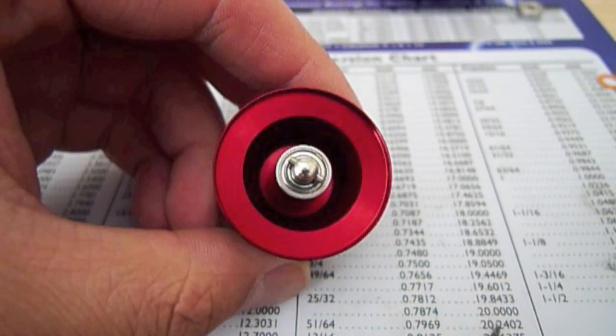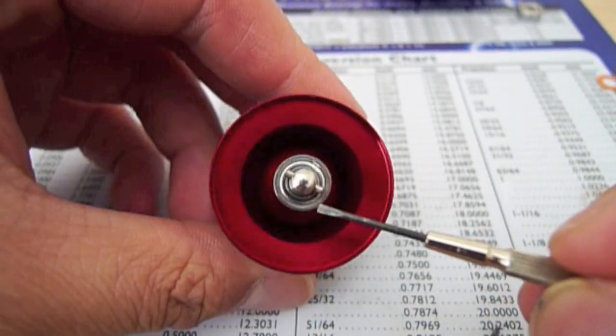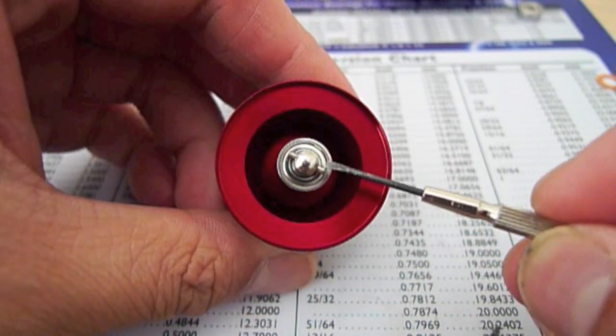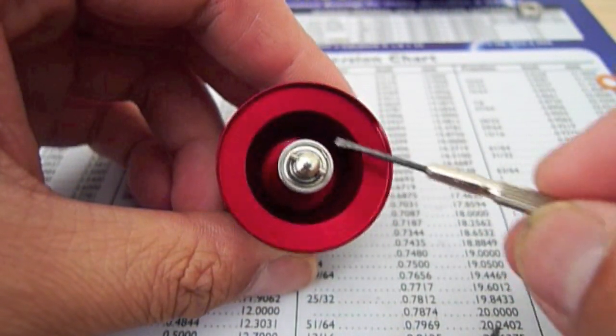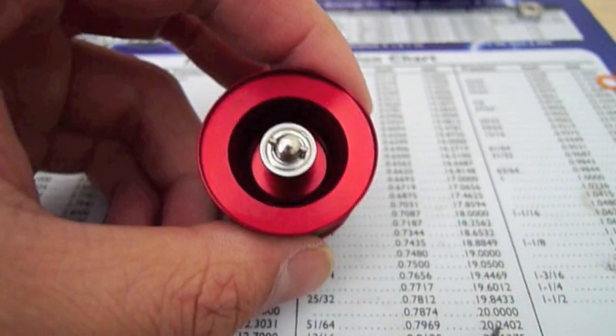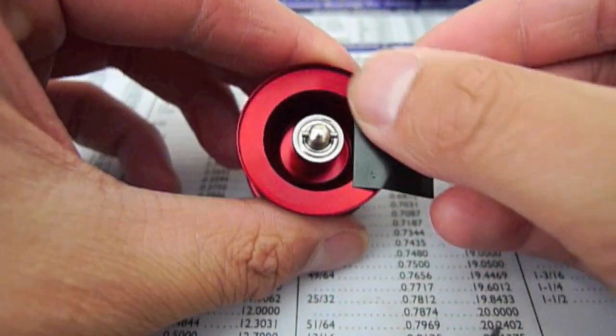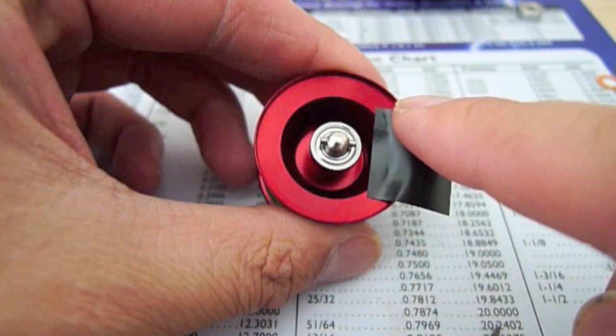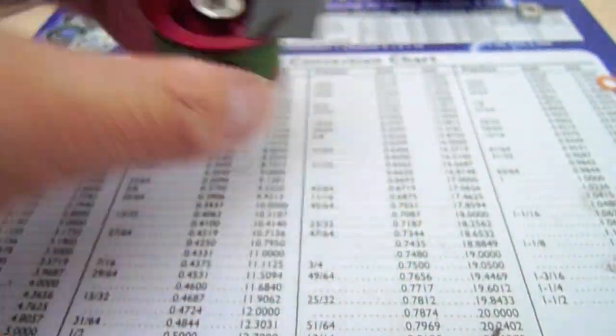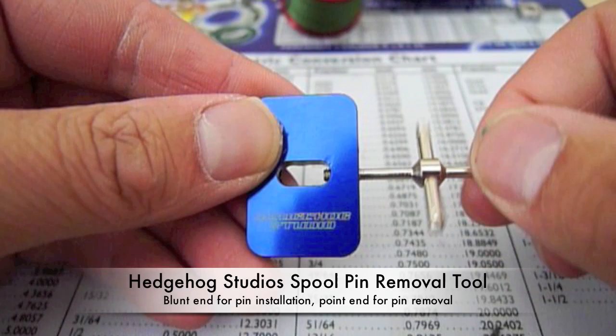The next bearing we're going to be replacing is the one on the spool. As you can see, there's a spool pin right here holding the bearing in place. The first thing we want to do is put a piece of electrical tape on the spool lip. This is going to prevent the tool from scratching the lip.